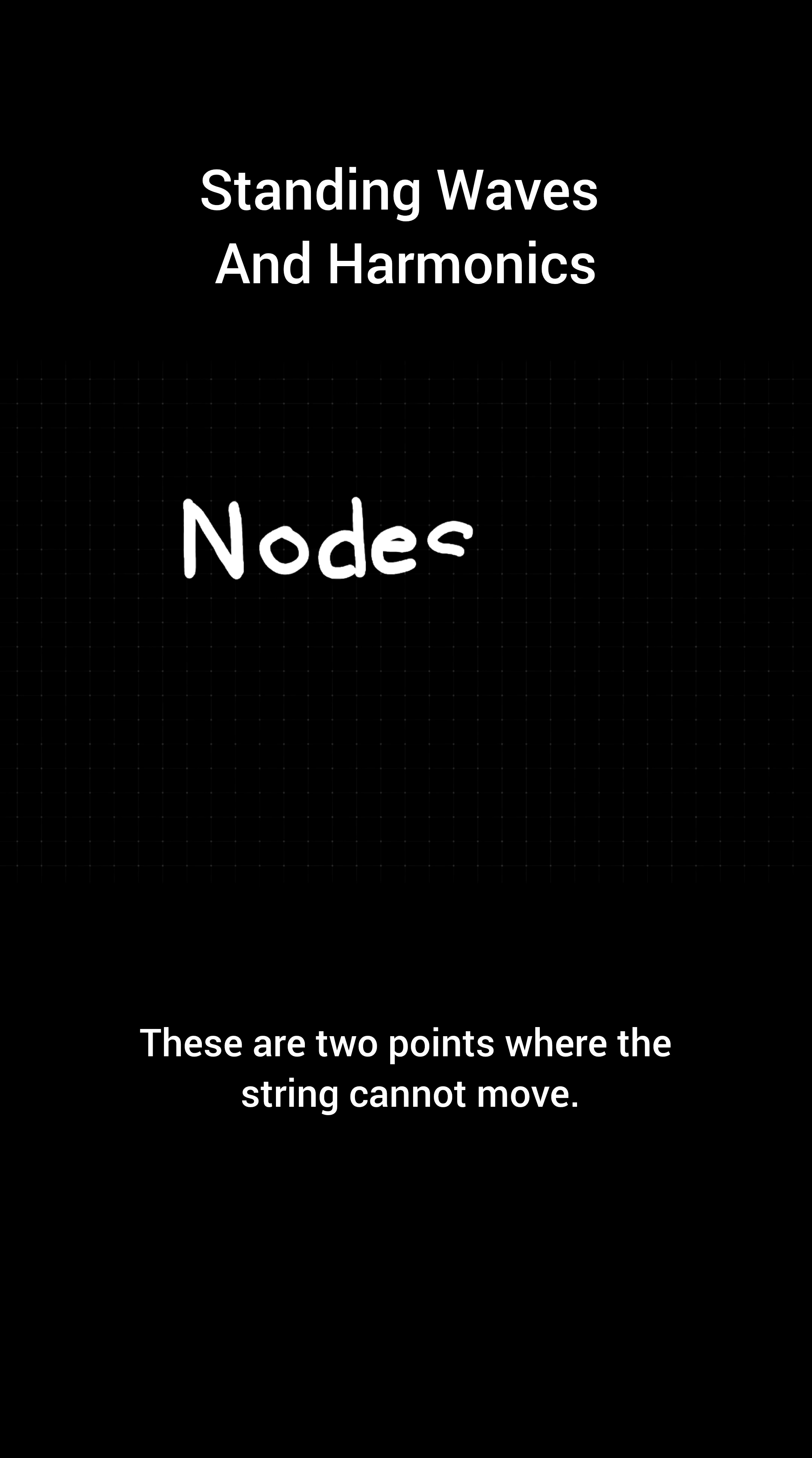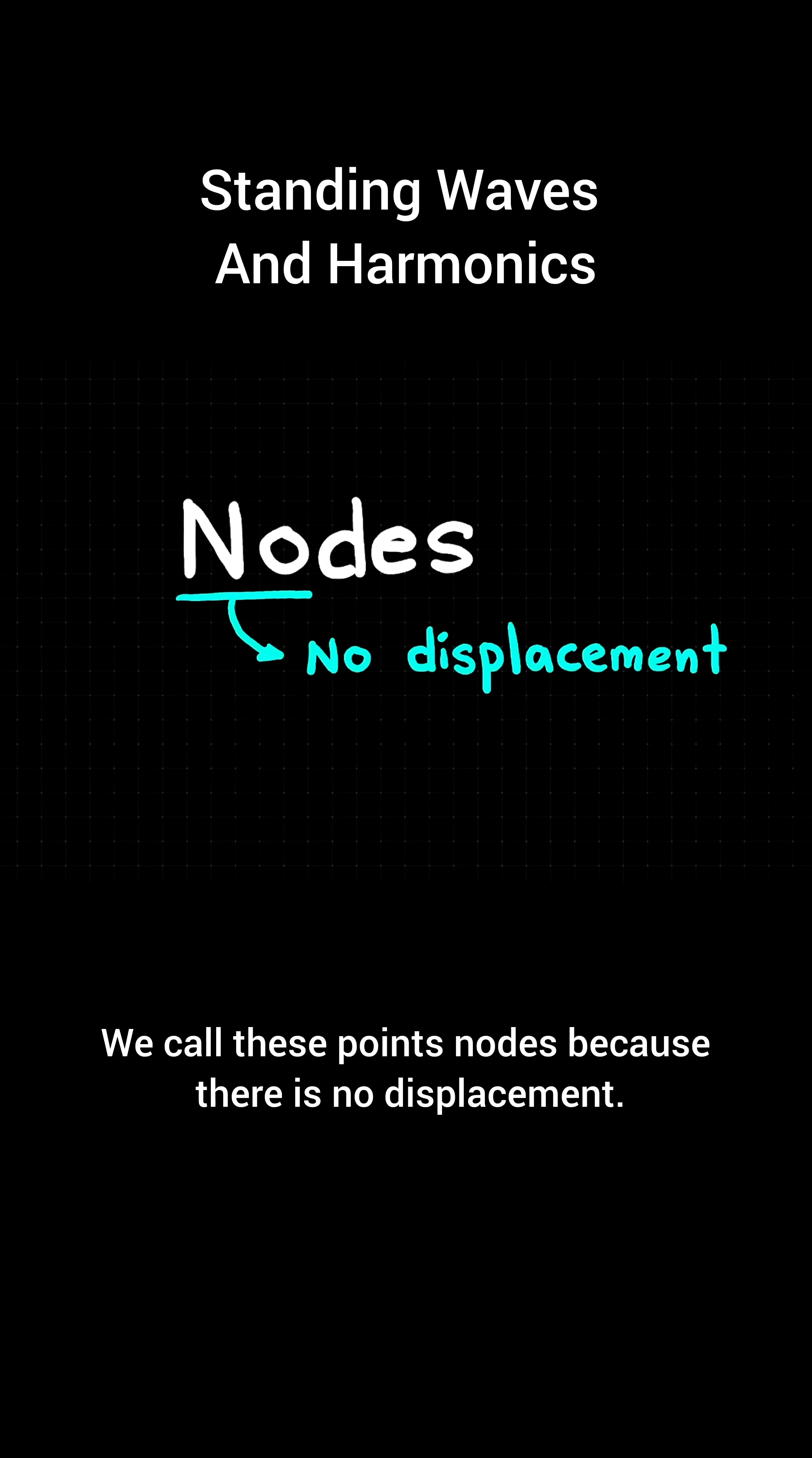These are two points where the string cannot move. We call these points nodes because there is no displacement.